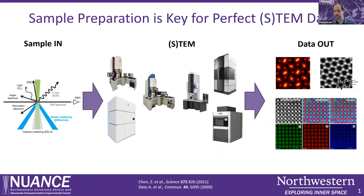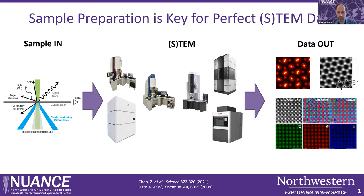What you hear much less often about is really the sample preparation process. On the left-hand side, I show the interactions of a primary beam, shown in green, with a thin TEM specimen. The majority of the electrons need to be transmitted through the sample. Whereas if you have a thicker sample, your probability of electron scattering will increase and multiple scattering effects can take place. The electron mean-free path gets altered depending on conditions like what accelerating voltage you're using.